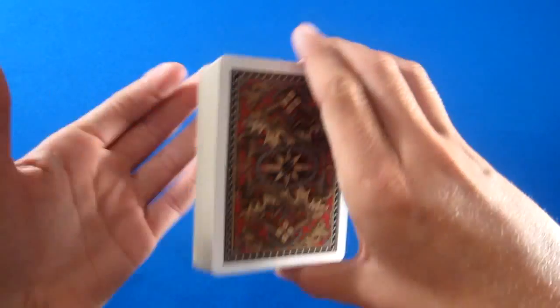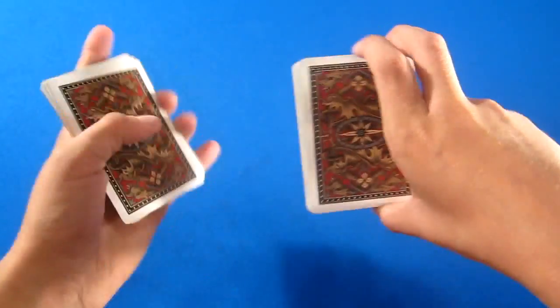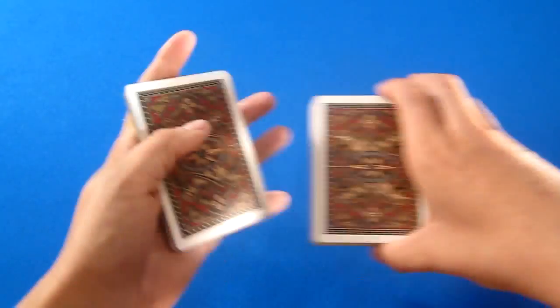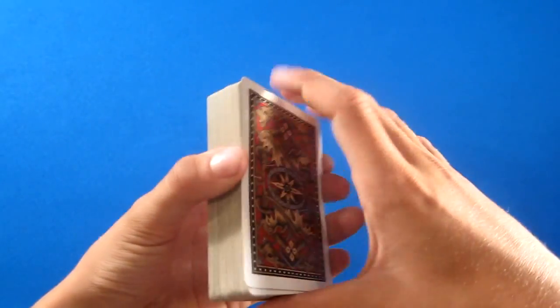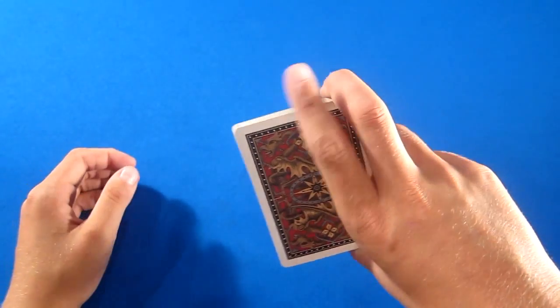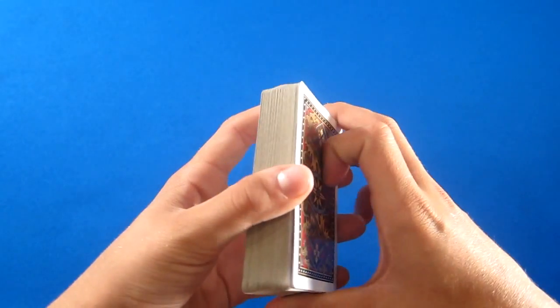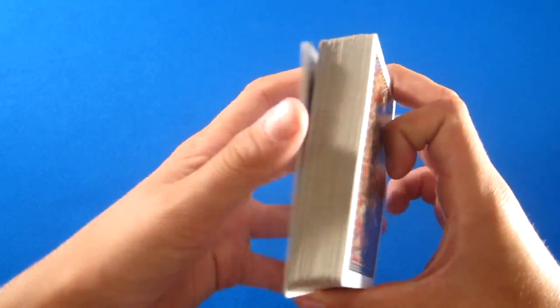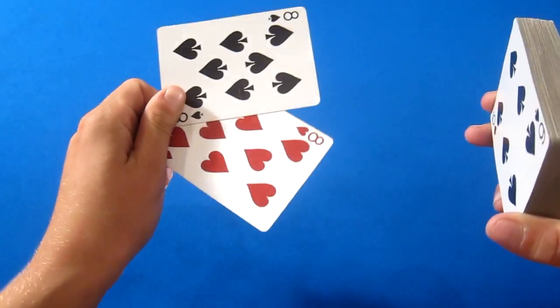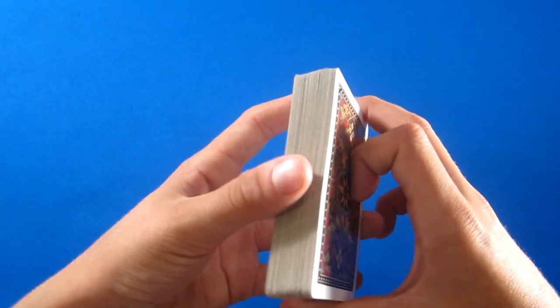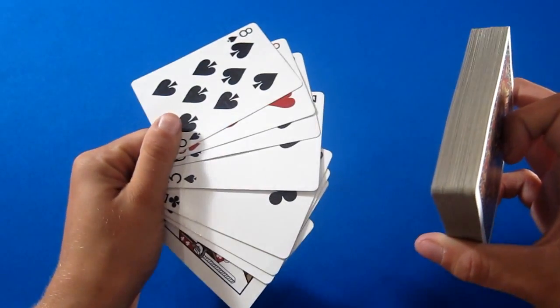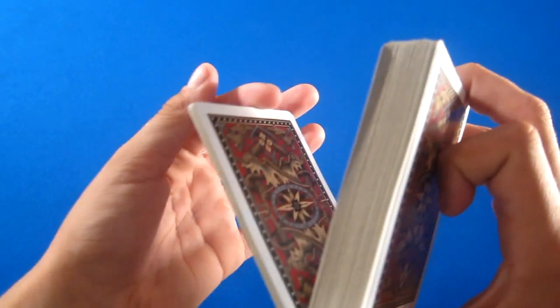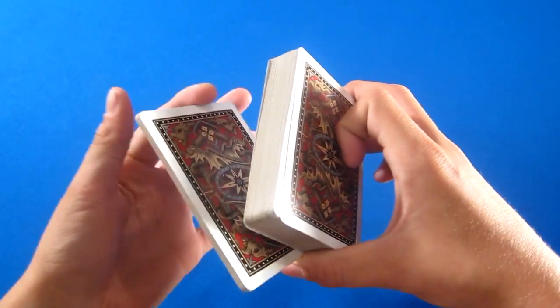What you're going to do is now you're going to start with this in a biddle grip, like the grip you would use to do a swing cut, but just hold it like that. A biddle grip. So, you're going to, what you're going to do is take this finger here and pull down maybe a little less, but from about that much cards.